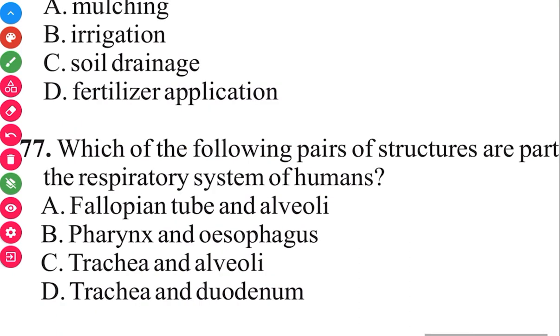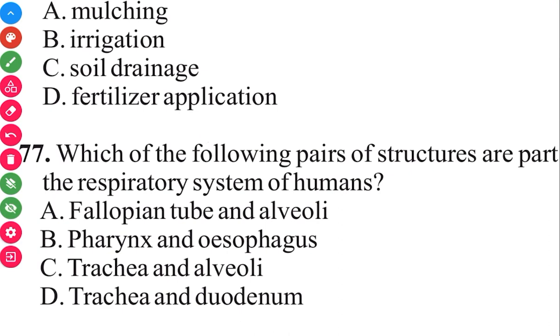Question 77. Which of the following structures are part of the respiratory system of humans? The answer in 3, 2, 1 is C, trachea and alveoli.